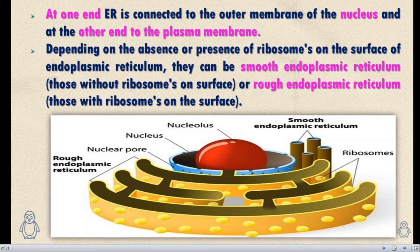At one end, the Endoplasmic Reticulum is connected to the outer membrane of the nucleus, and at the other end to the plasma membrane, which is also called the cell membrane. Depending on the absence or presence of ribosomes on the surface, it can be smooth Endoplasmic Reticulum or rough Endoplasmic Reticulum.